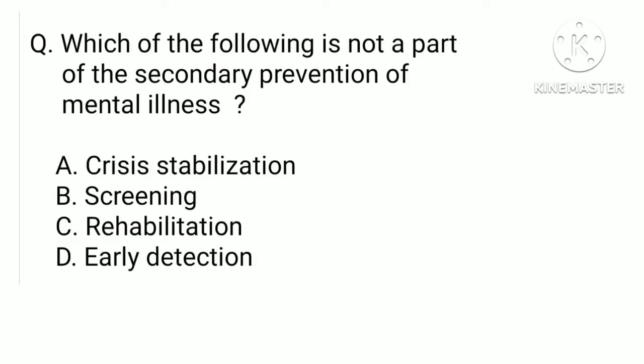Secondary prevention of mental illness includes: a) crisis stabilization, b) screening, c) rehabilitation, or d) early detection. The correct answer is c) rehabilitation. Early diagnosis and immediate treatment is part of the secondary level of prevention.